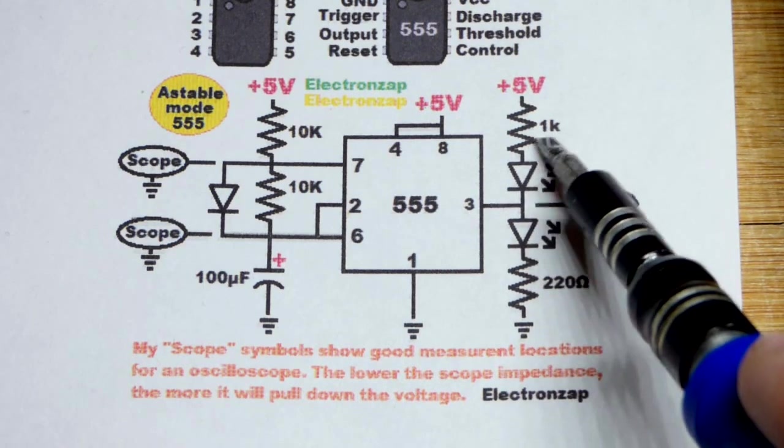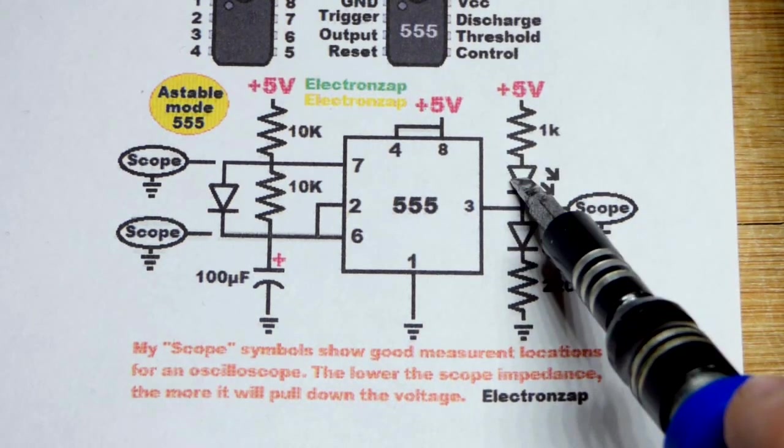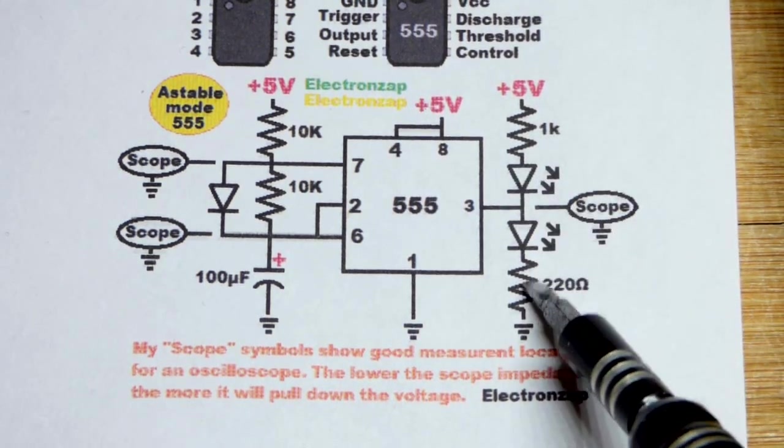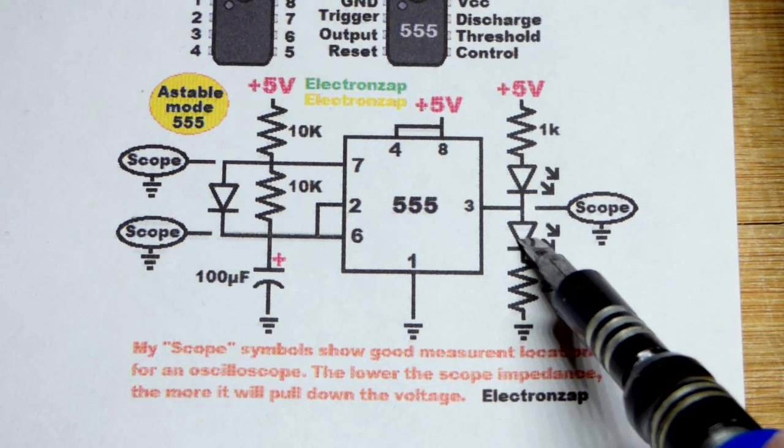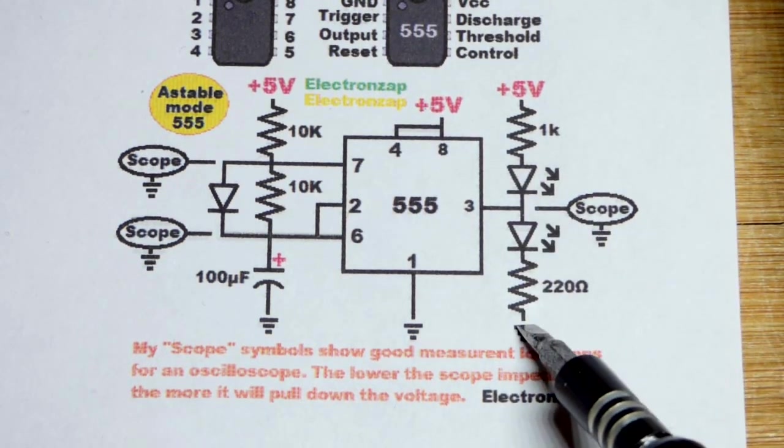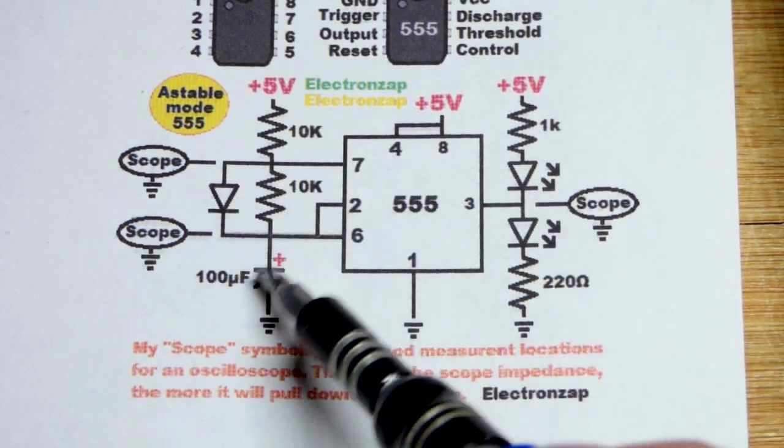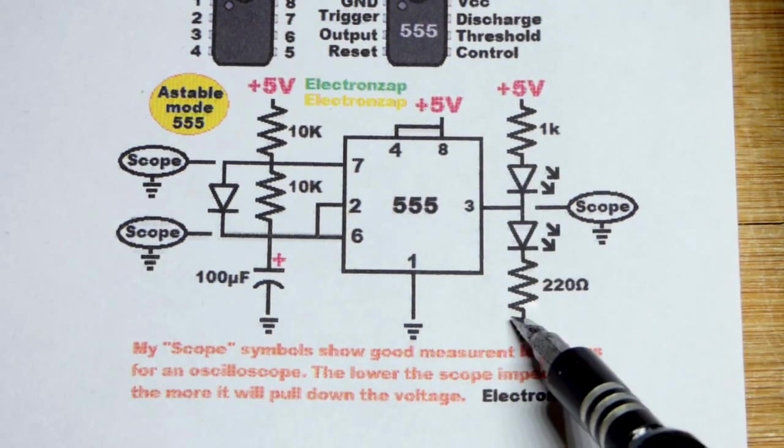It has a lower value resistor than the blue LED because the blue LEDs are naturally brighter. So we want more current to go through the red LED so that it gets close to the same brightness as the blue one.